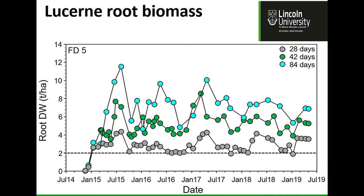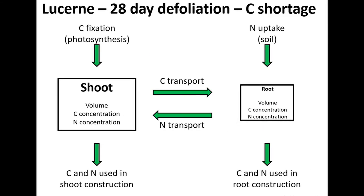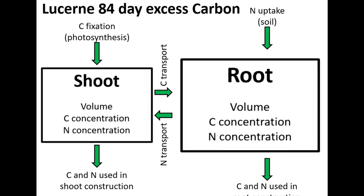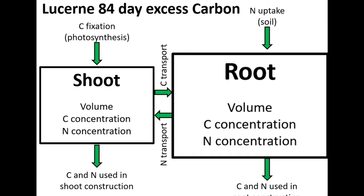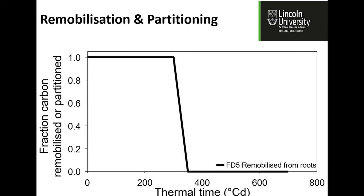The same thing happens with a grass plant. In the 28-day defoliation, I'm removing carbon too quickly, taking away the solar panel, and reducing root reserves. In an excessively long rotation, I actually build up the roots and allow shoot growth to be a bit more. Balancing those two is what pasture and grazing management is about. We can look at this from the perspective of what happens within a single rotation or growth cycle.